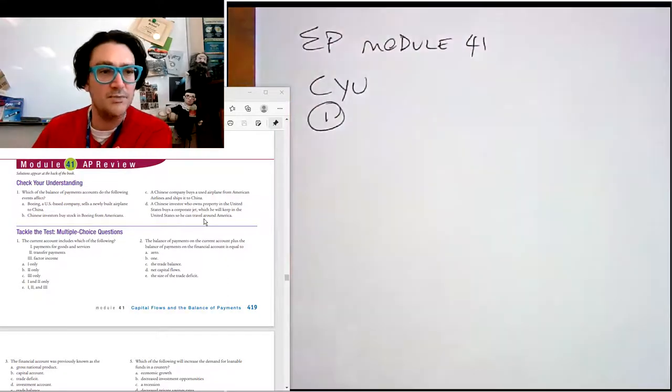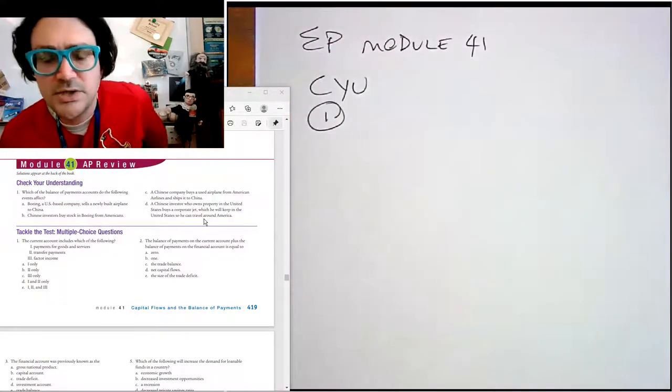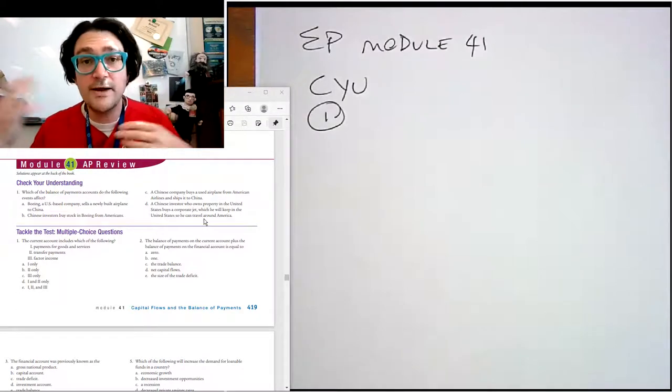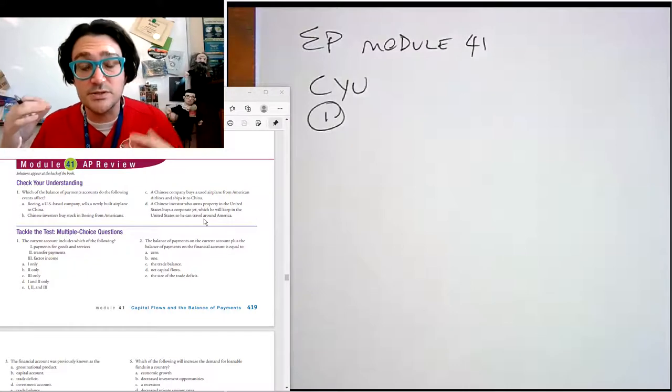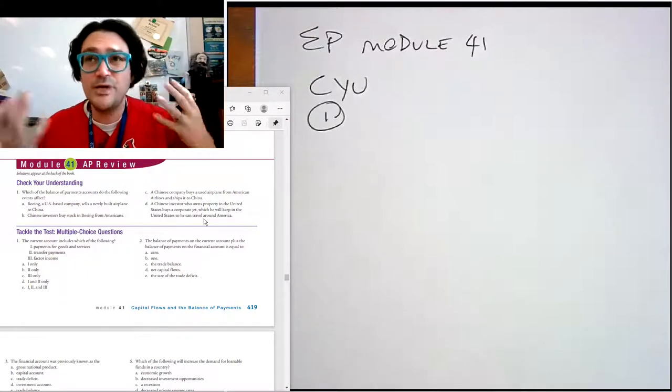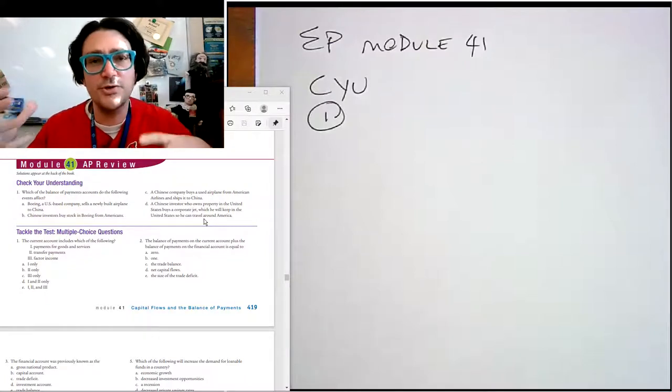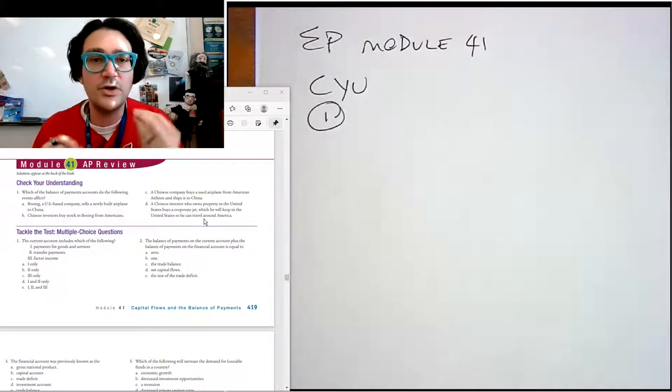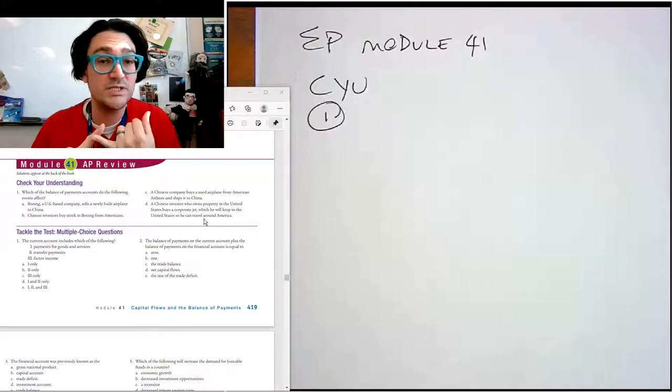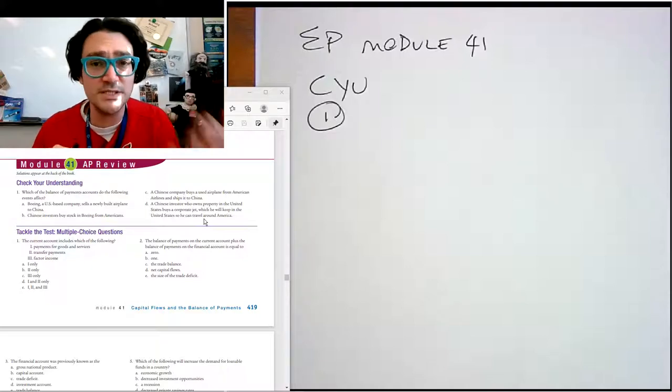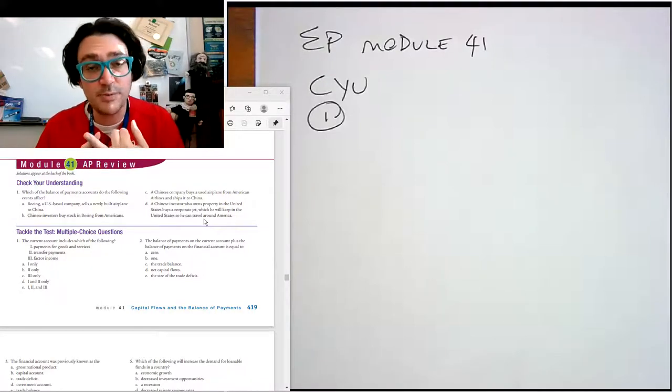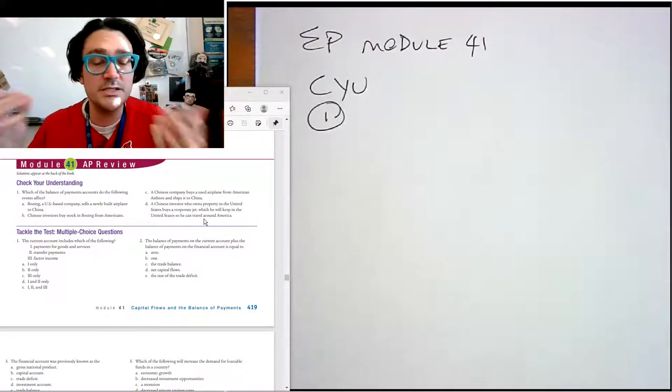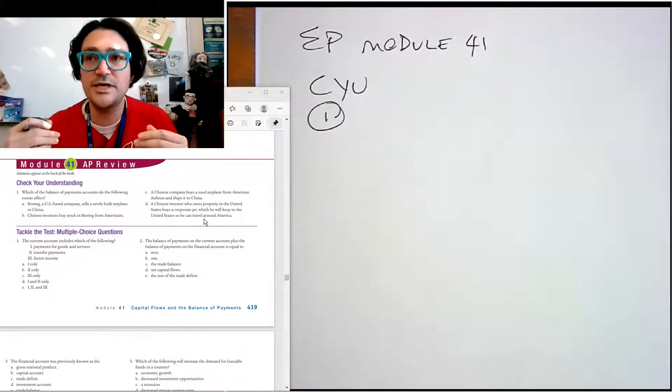Check your understanding number one is four scenarios. And basically each of these scenarios is a change. And it's asking, is it current account or financial account? Now, we know that the current account and the financial account have to balance each other. So if one goes up the other has to go down. But this is really saying, which one is it directly getting counted in? We know that the current account is basically imports and exports, so the change of goods and services across borders. We know that it's the change in income across borders. So if there's wages or corporate profits or something like that, or interest on bonds, if it's an international transaction that would be the current account.